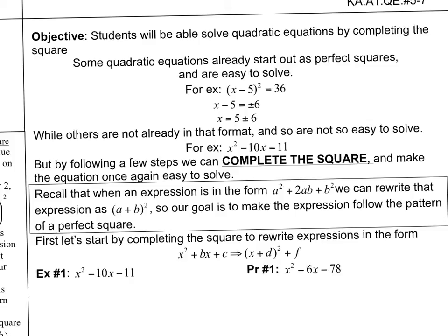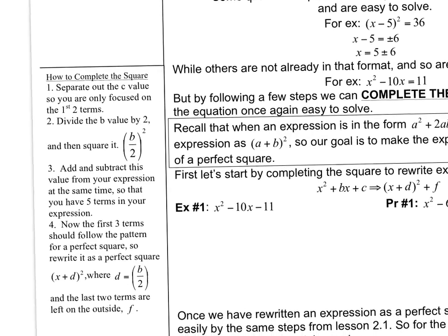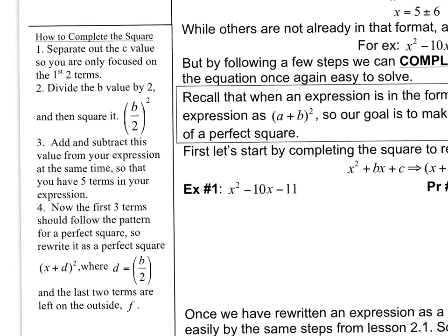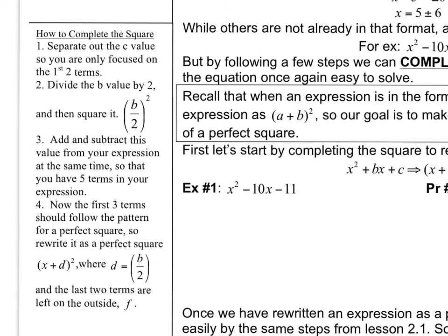We're going to start off by just completing the square — get it from looking like this to looking like that. So we're going to attack x squared minus 10x minus 11, which is the same thing as this equation here. The first step is to separate out the c value so that you're only focused on the first two terms. I mean write it like this: x squared minus 10x, and then just put your negative 11 away over here.